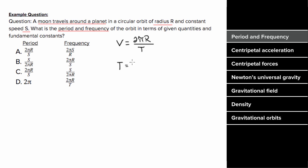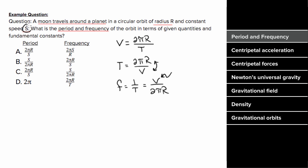That means the period would be equal to two pi r over the speed. And since frequency is one over the period, if we take one over this quantity, we just flip the top and bottom, and we get that the frequency is the speed over two pi r. But we can't leave our answer in terms of v — we had to express this in terms of given quantities. We were given s, so the period is two pi r over s, and the frequency is s over two pi r.